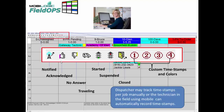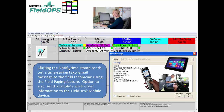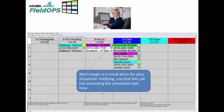There are six pre-designed timestamps and eight user-defined timestamps, all with custom colors. Clicking the notify timestamp will actually send out a time-saving text or email message directly to your field technicians using our paging feature. As an option, you can also send a complete work order directly to the field technician's mobile device. The red triangle is a visual alarm for your dispatcher to notify them that this job has exceeded the actual scheduled start time.